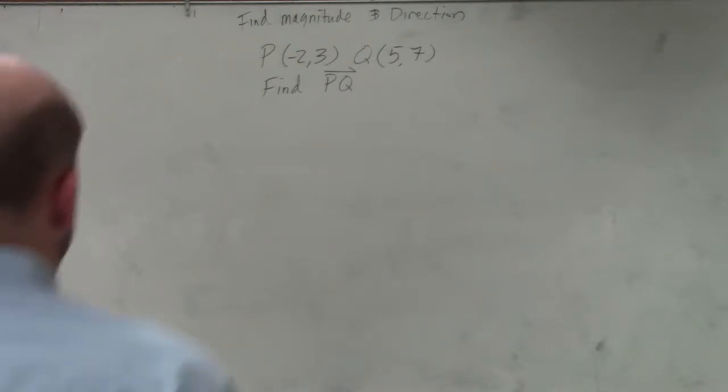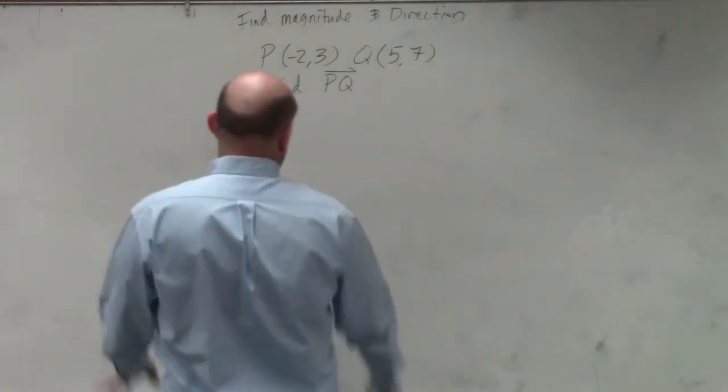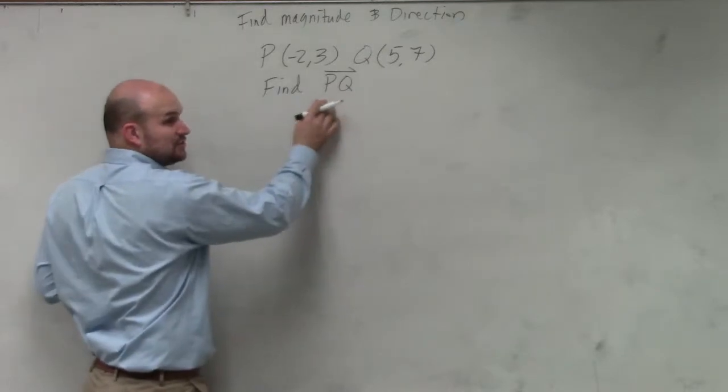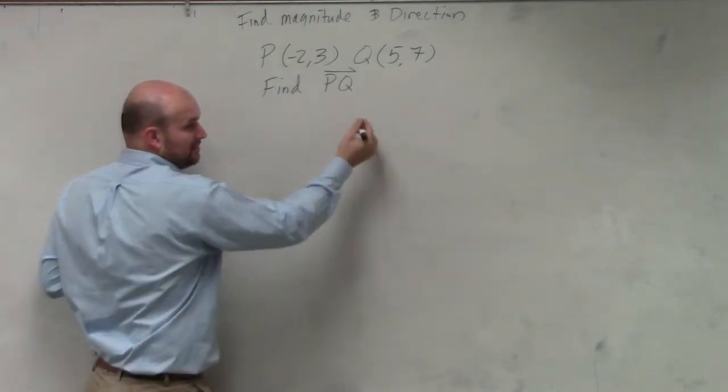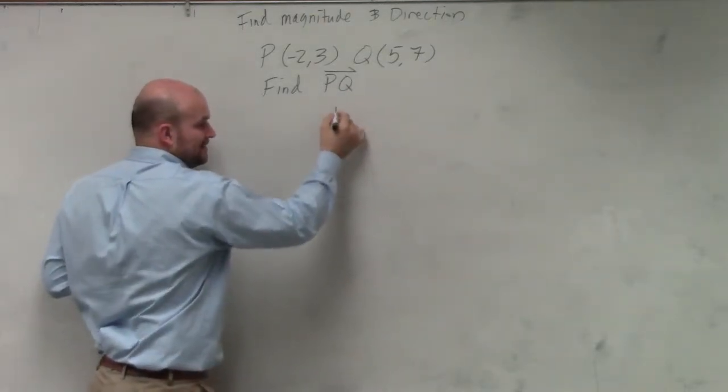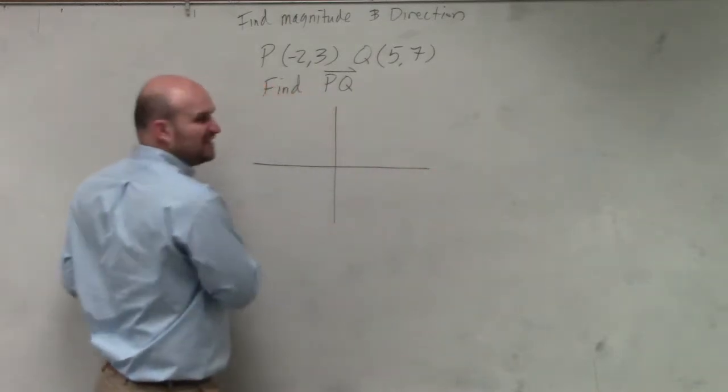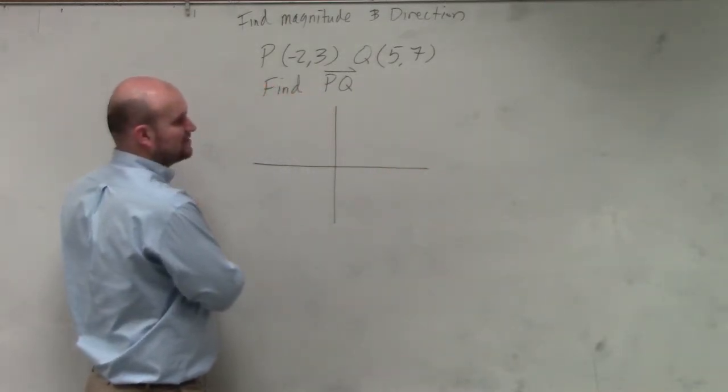But what we're doing is we're traveling from P to Q. That means P is my initial point and Q is going to be my terminal point. So what I recommend doing here is just plotting them so you can see what they look like as coordinate points.